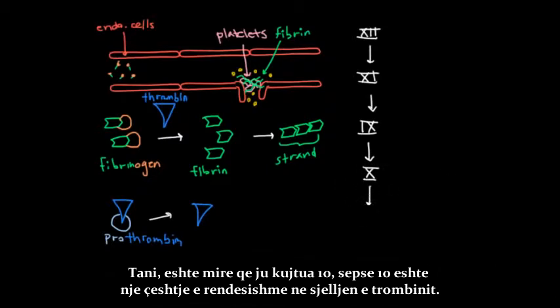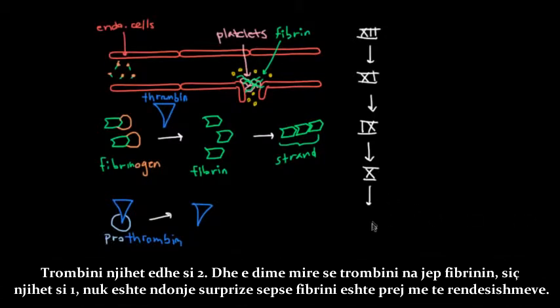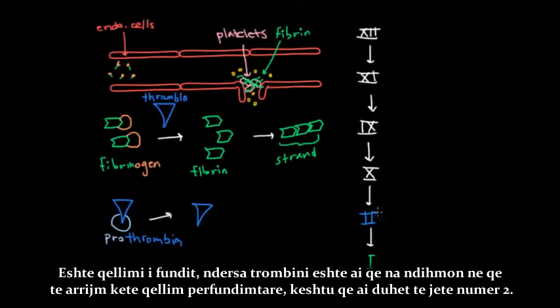Now, it's good that you remembered 10, because 10 is a big deal, and he's going to help bring us thrombin. It turns out that thrombin is also known as 2. And we know very well that thrombin helps give us fibrin, which is known as 1. And that's no surprise, because fibrin's the most important guy, he's the ultimate goal, and thrombin is the guy that helps us get the ultimate goal, so he should be number 2.